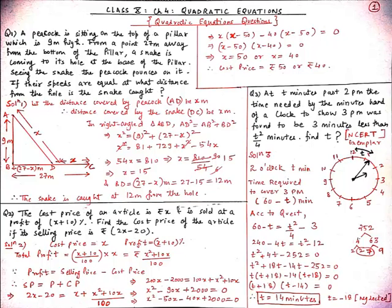Our first question for today is: a peacock is sitting on the top of a pillar which is 9 meters high. From a point 27 meters away from the base of the pillar, a snake is coming to its hole at the base. Seeing the snake, the peacock pounces on it. If their speeds are equal, at what distance from the hole is the snake caught?